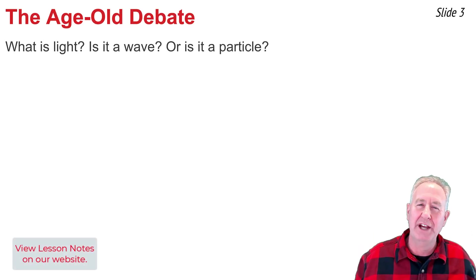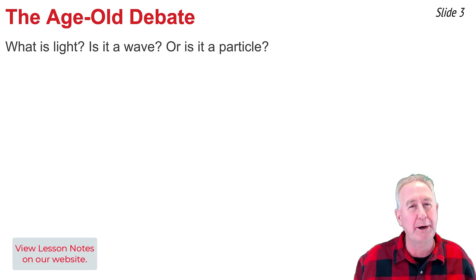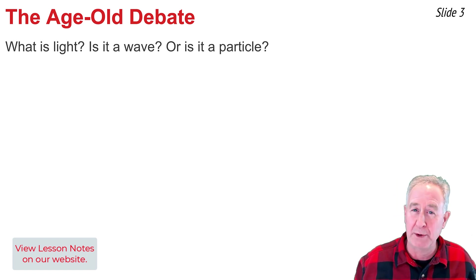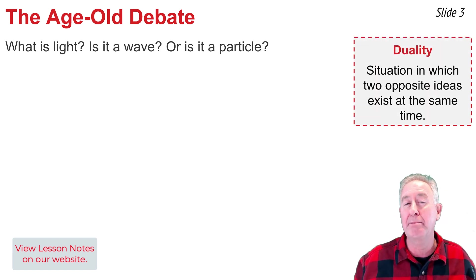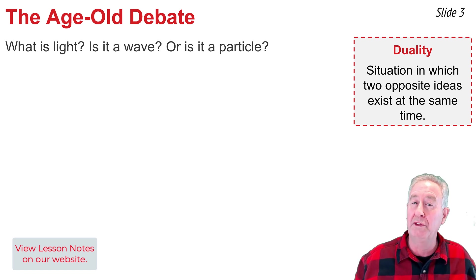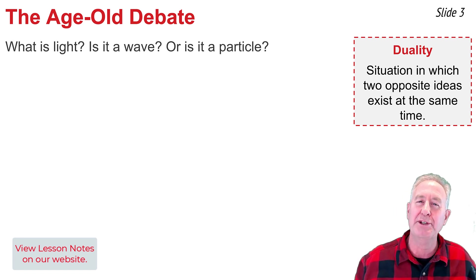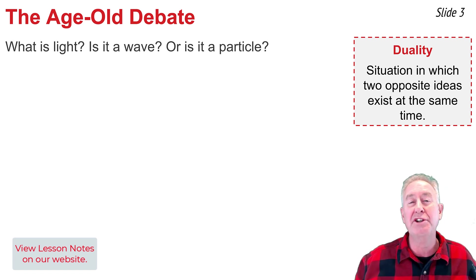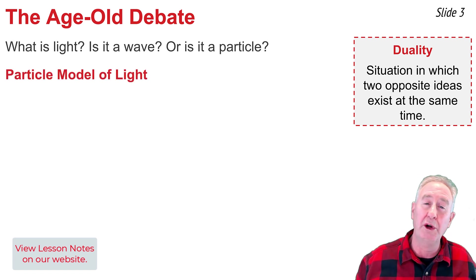There is an age-old debate in science regarding the nature of light. What exactly is it? Is it a particle or is it a wave? Scientists have landed upon the idea that light is both particle and wave. The so-called dual nature of light describes light by two seemingly opposite ideas: being a particle and being a wave.